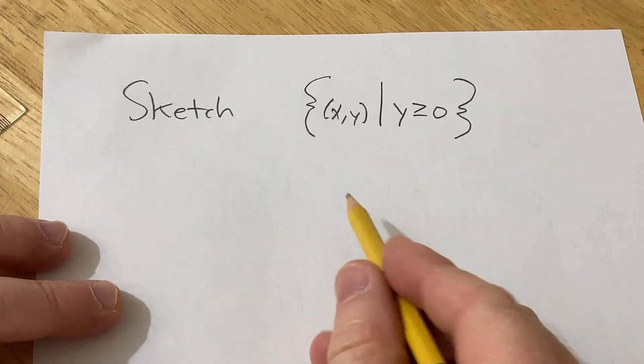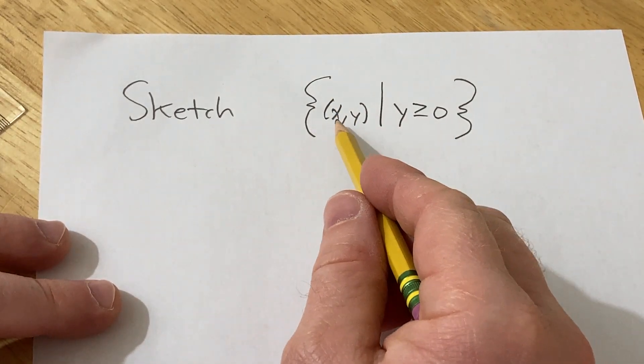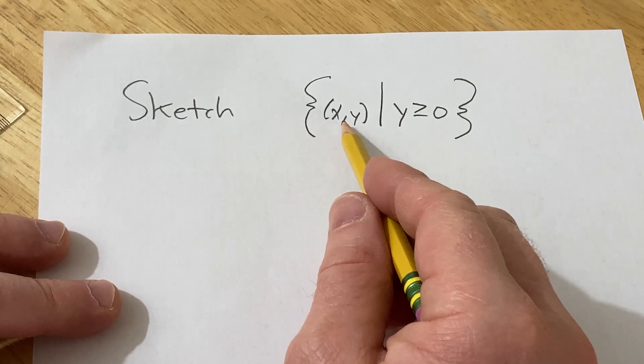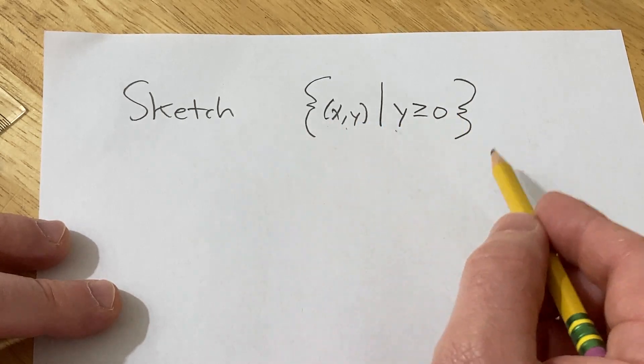Hello, in this video we're going to sketch the region given by this set. This is the set of all ordered pairs such that y is greater than or equal to zero.